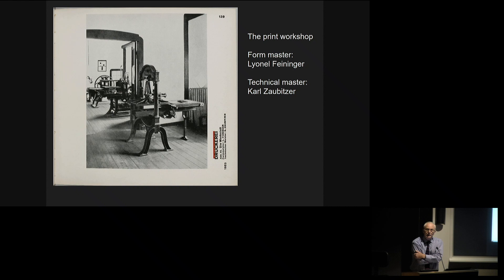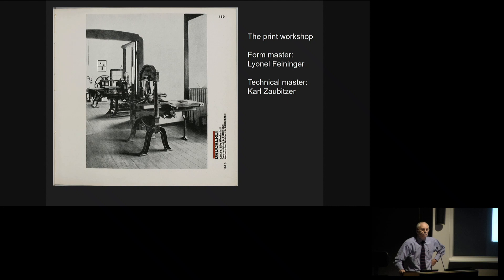They only had three presses of a type which most artist printmakers would have had in their own studios — a platen press, an etching press, and a small lithographic press. In reading through the background to this, Hustschmidt maintained long afterwards that the Bauhaus had wanted much better presses, but that Henry van de Velde owned the presses, and that these had been impounded at the outbreak of the First World War because he was a Belgian national, and never returned.